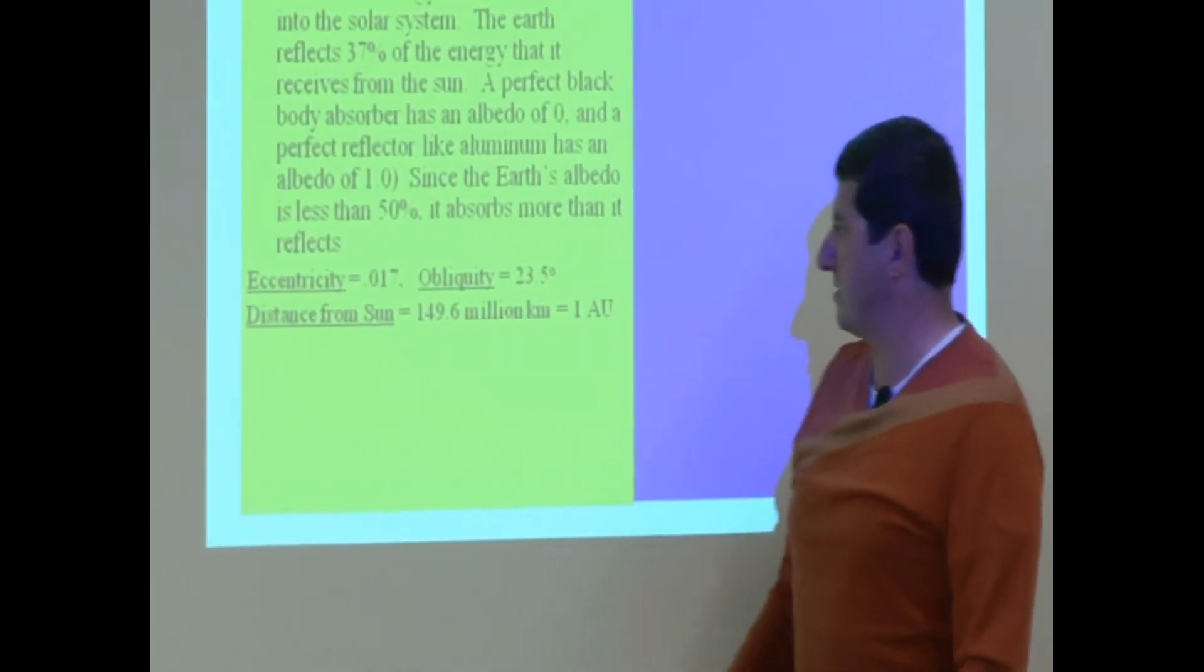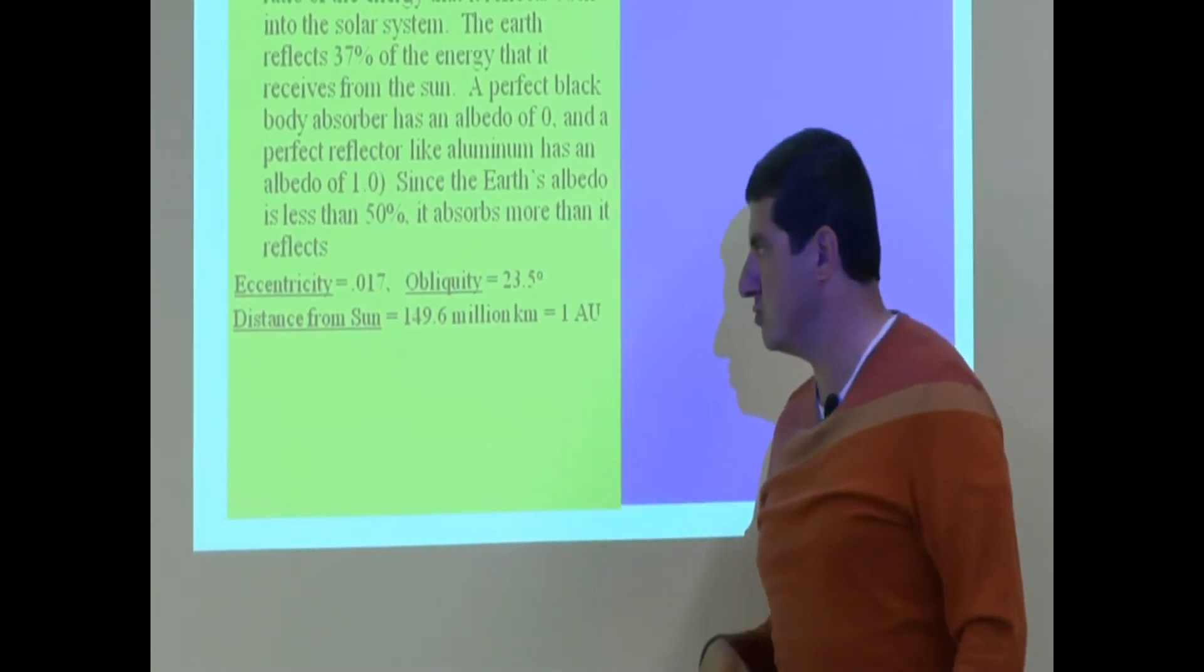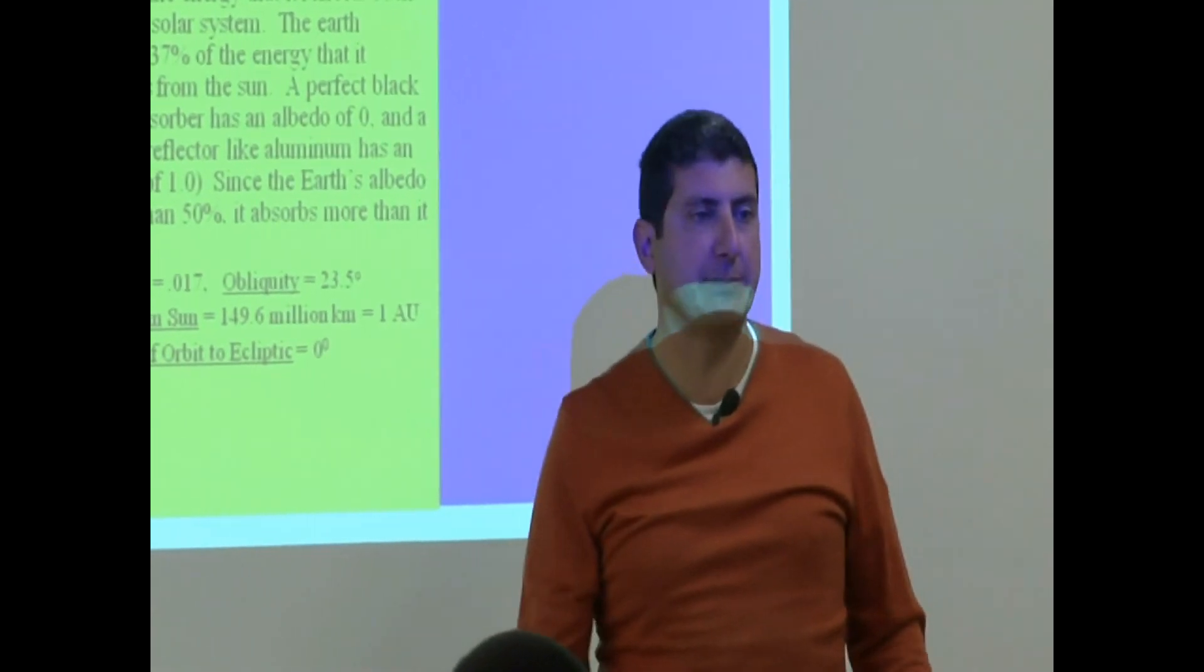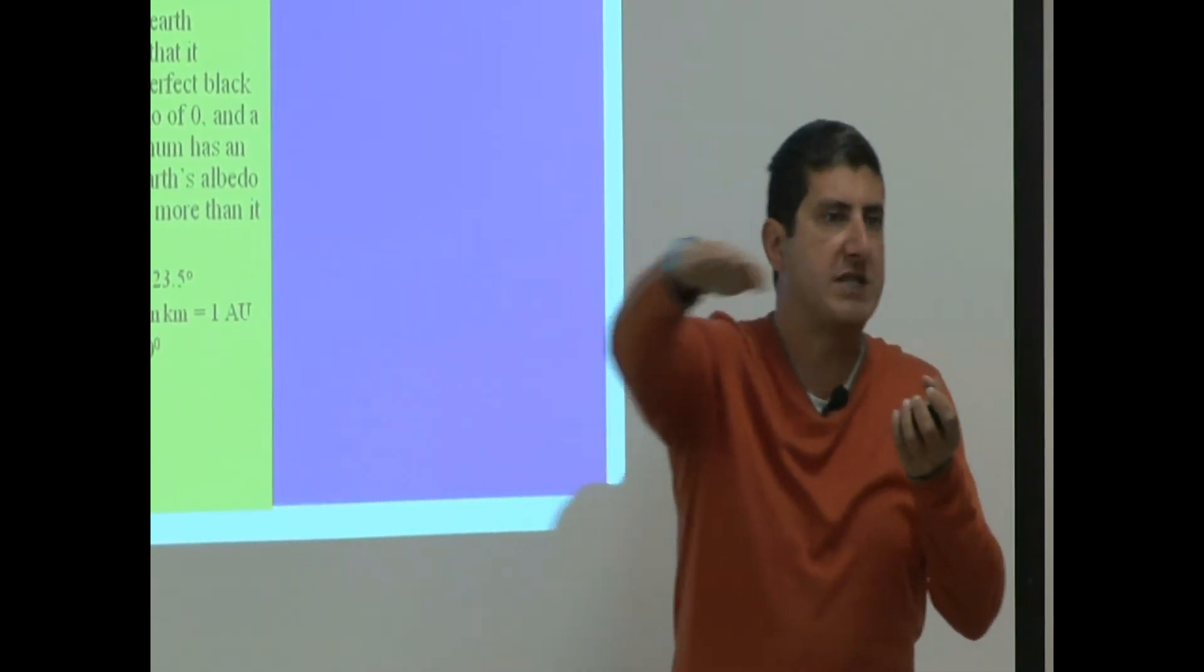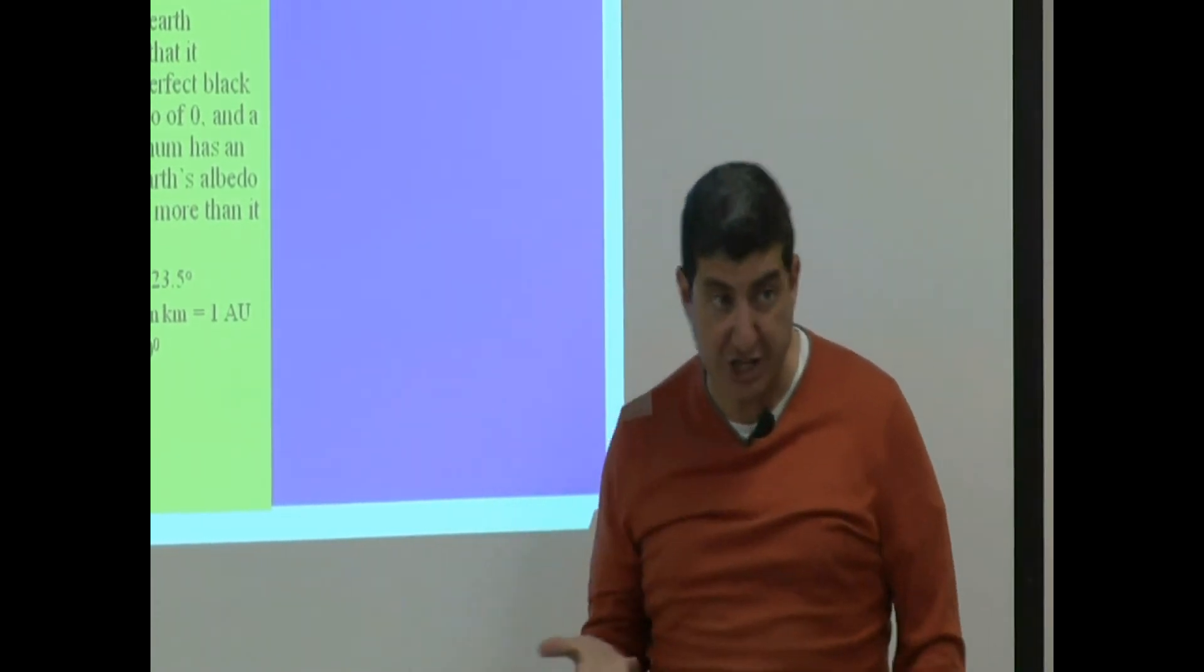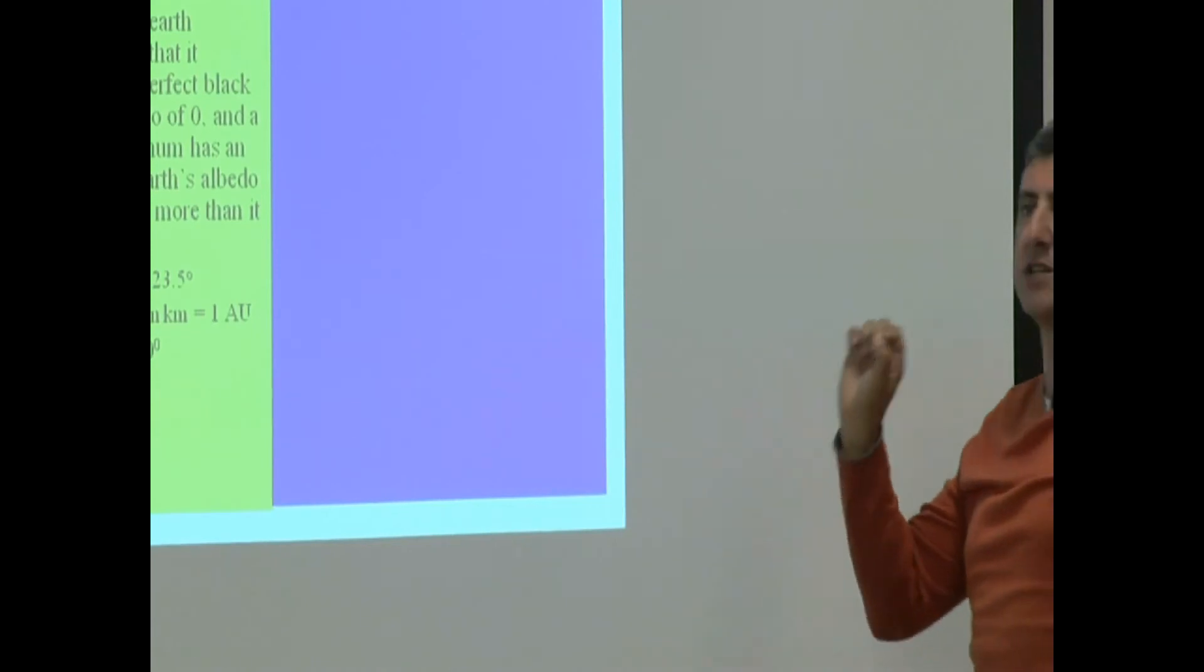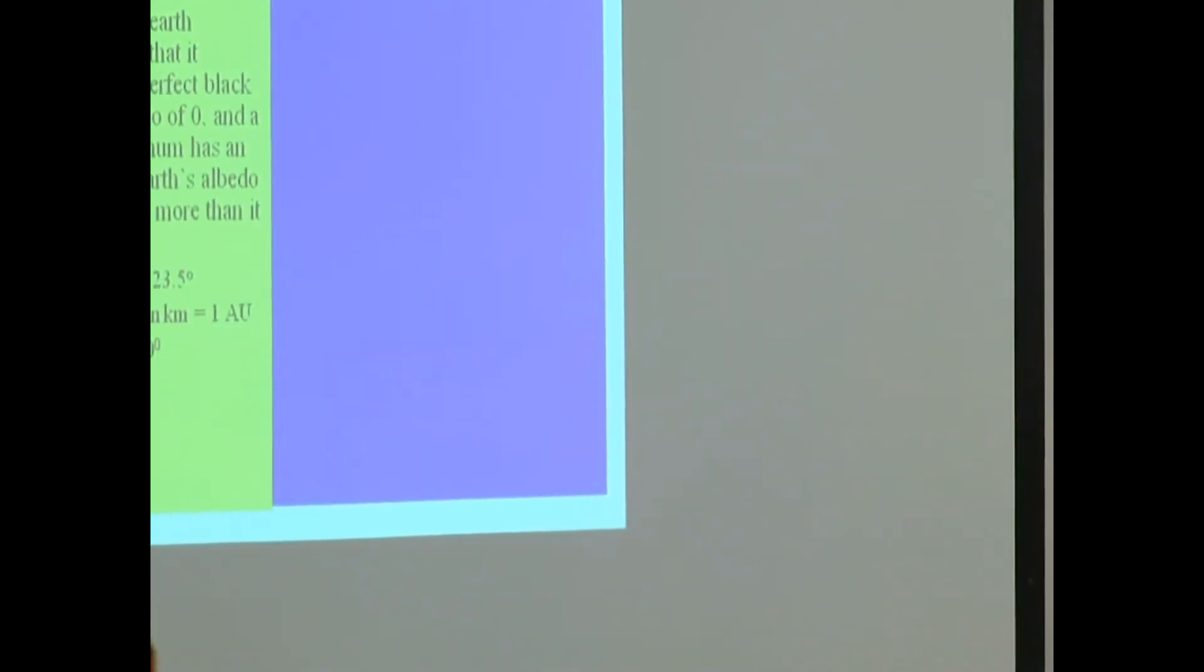The distance from the sun, 149.6 million kilometers, 1 AU. Inclination of orbit to the ecliptic. That means as it goes around the sun, the orbit that it makes, well, by definition, we call that 0 degrees inclination because we're calling the earth's orbit the reference frame to compare everything else to. So by definition, that is 0 degrees.